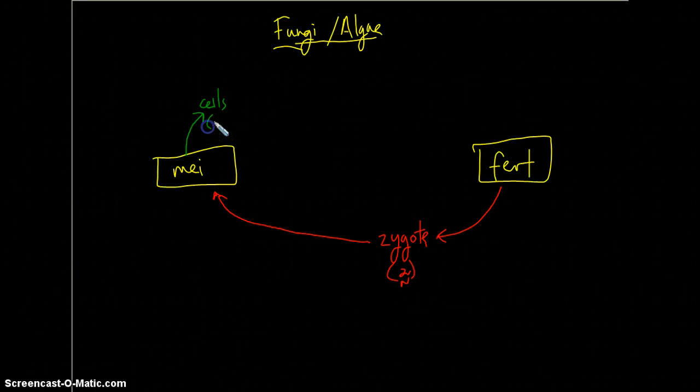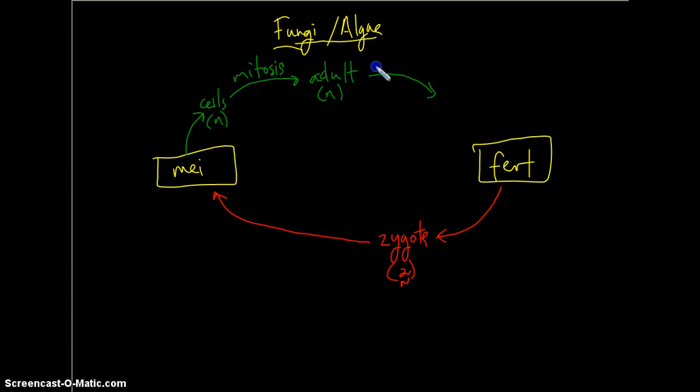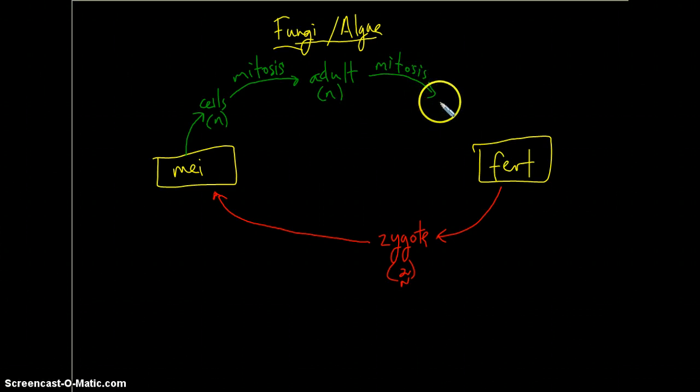Now, these haploid cells then undergo mitosis. So again, you're creating a larger haploid organism here that creates a haploid adult structure. And then, again, through cell division or through mitosis, this haploid adult ends up creating haploid gametes.